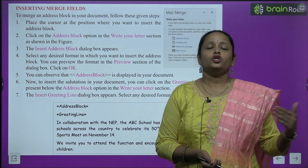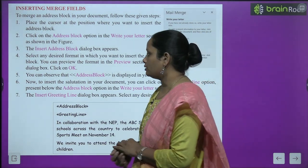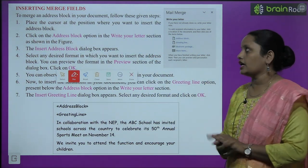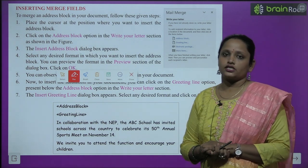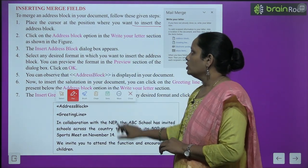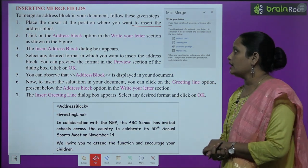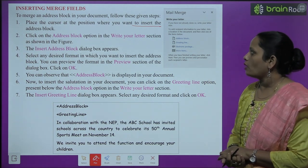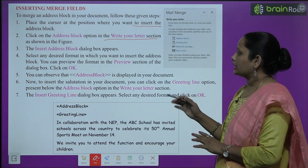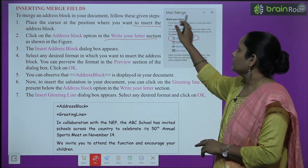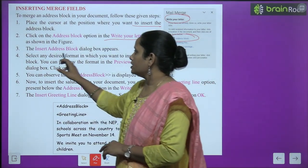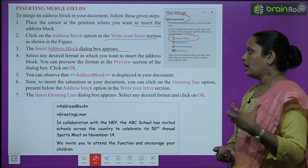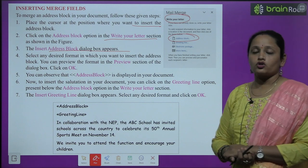Now let's learn how to insert merge fields. To merge an address block in a document, follow the given steps. First, place the cursor at the position where you want to insert the address block. Then click on the Address Block option in the Write Your Letter section. The Insert Address Block dialog box will appear.